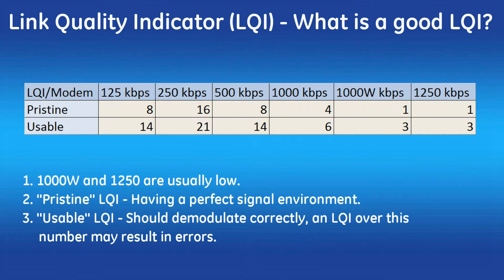How should you read this table? First, the LQI on modems 1000W and 1250 are usually low — if you see an LQI value, a signal is present. Due to the receiver's wide bandwidth in 1000, 1000W, and 1250 modems, the dynamic range is lower, which typically resolves to a low LQI. For the remaining modems, 'pristine' means in an absolutely perfect signal environment the best LQI will be less than or equal to the table value. 'Usable' means the signal quality is good and the radio should be able to demodulate correctly; however, if LQI averages are approaching this limit, one could expect errors. Ideally, average LQI should fall somewhere between the two values shown for each modem.